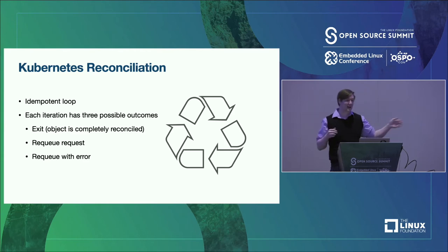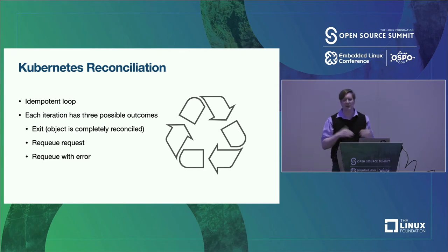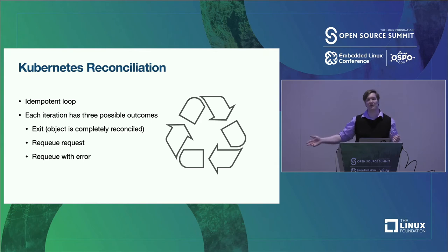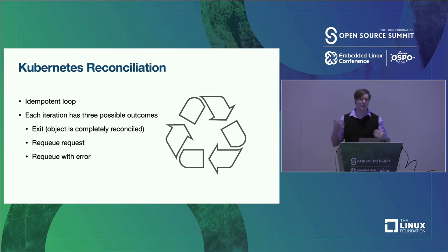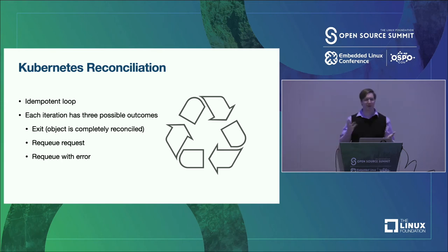Each single iteration of the loop has three possible outcomes. The simplest is just to exit, marking the resource as fully reconciled — the actual state on the cluster is equivalent to the desired state in etcd. The second, probably more common, exit is to requeue the request, meaning the object is not done being reconciled, so please continue trying. The third is to requeue with error — similar to the second, but you pass along an error with information about what might be going wrong, like waiting for pods to come up after creating a deployment.